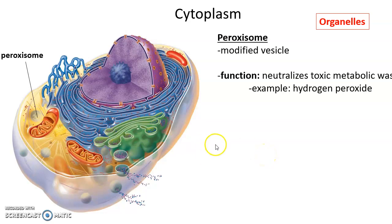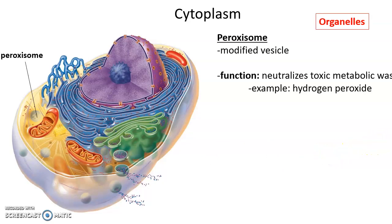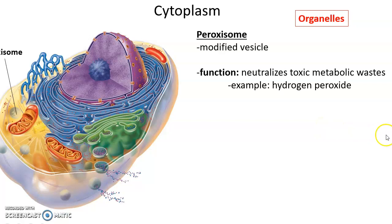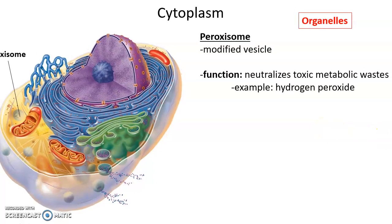Peroxisomes are modified vesicles with specialized enzymes functioning in neutralizing toxic metabolic wastes. Waste products produced by metabolic processes in the cells that are toxic get sent to the peroxisomes where they are neutralized so they don't damage the cell. For example, hydrogen peroxide produced by our cells is converted into less toxic compounds inside peroxisomes.